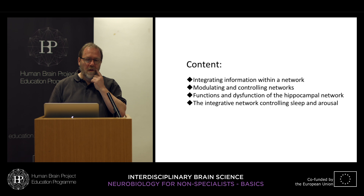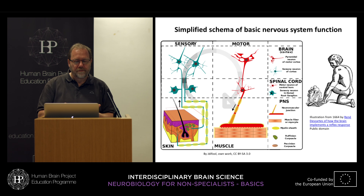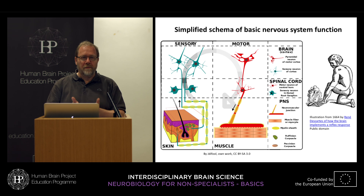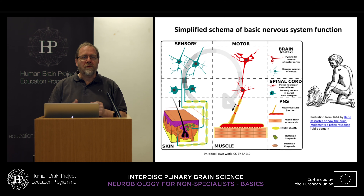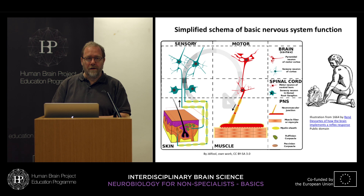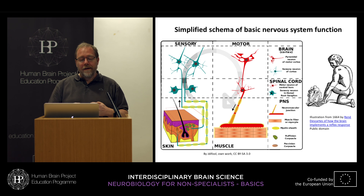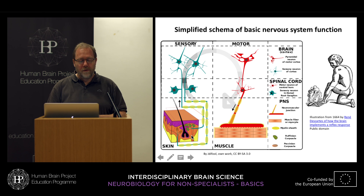If we look at networks, we can have a very simplified scheme of nervous system functions. Some rough idea of how that could work was around already in the 17th century, when you look at René Descartes' description of how signaling from a foot which is too close to fire goes to the brain and leads to the reaction to retract.